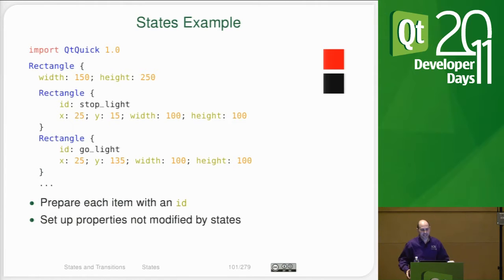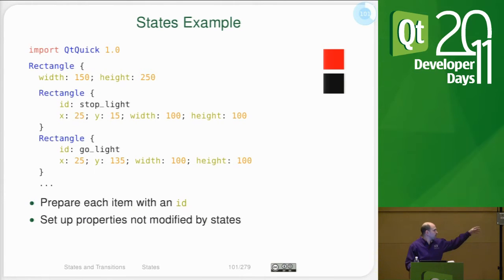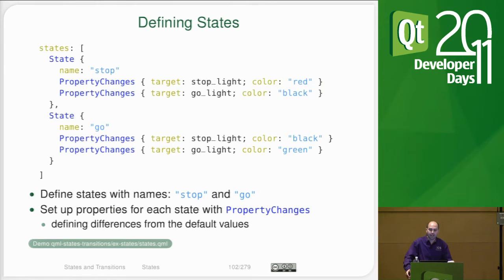Here we are making a simple traffic light that only has stop and go — we'll forget the yellow for now. We have a red light and a green light, stop and go, and whichever one is off becomes black. We're going to start off with a simple layout of two rectangles.